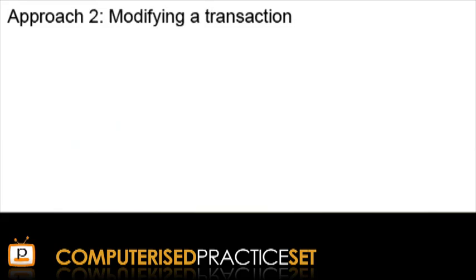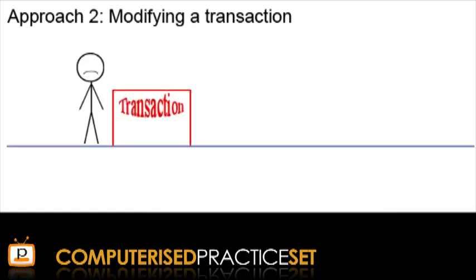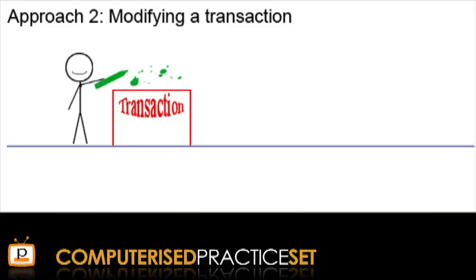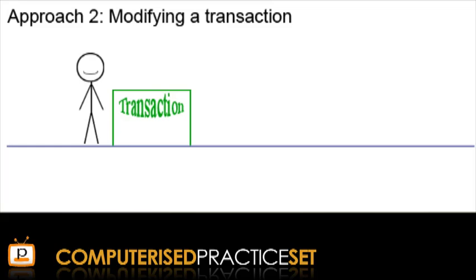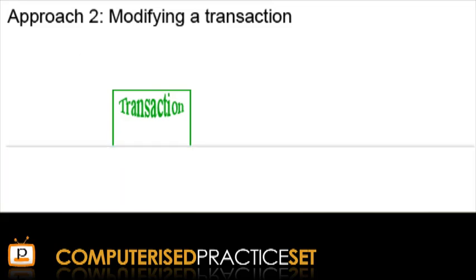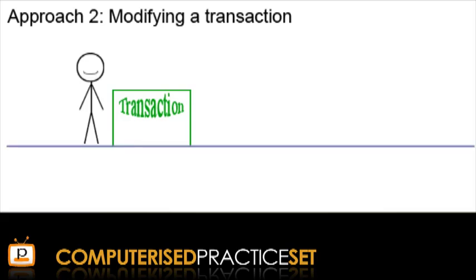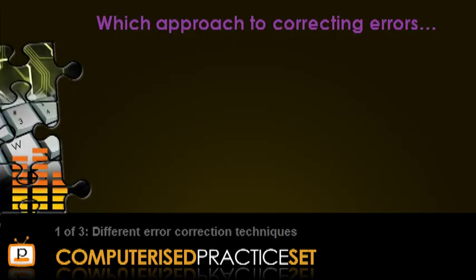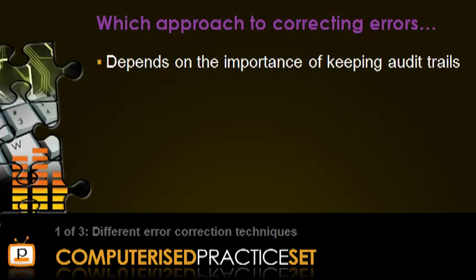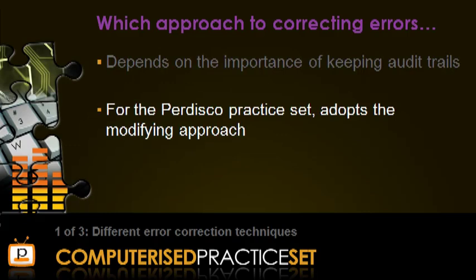Now that we've covered the first approach, let's look at the second approach: modifying the original transaction. Here is Chris and the wrong transaction again. This time, Chris is going to make changes directly to this wrong transaction in order to correct it. Once the changes are made, the transaction is now correct. Notice when modifying the original transaction, there is only ever one component — the single transaction itself — and that one transaction changes its character during the editing process. Which approach to correcting errors should be used? It really depends on the importance of keeping audit trails to your organisation. If you are completing the Pedisco practice set, we will adopt the second and easier approach, which is modifying a transaction directly.